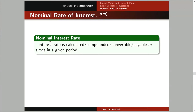And then this nominal interest rate, it is the interest rate calculated — it can be monthly, so 12 times a year; semi-annually, 2 times a year; quarterly, 4 times a year. So that's nominal interest rate.